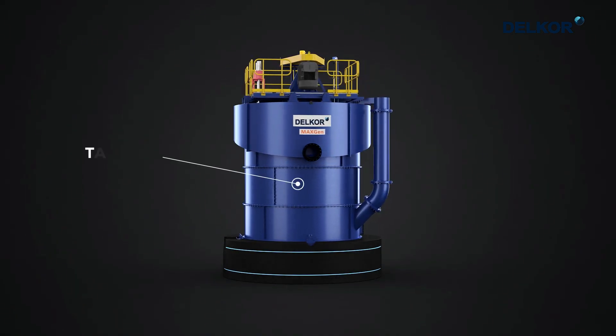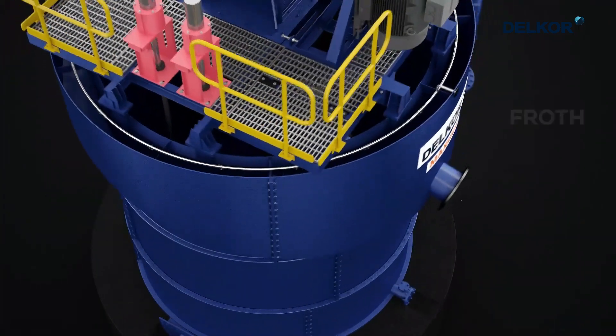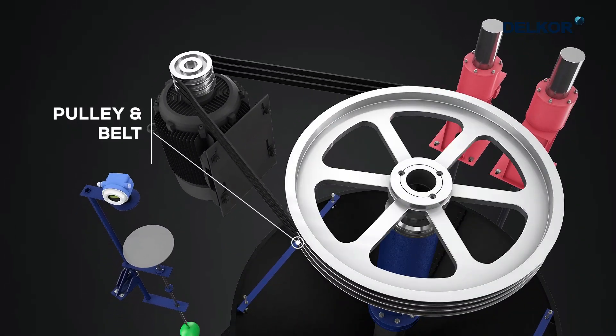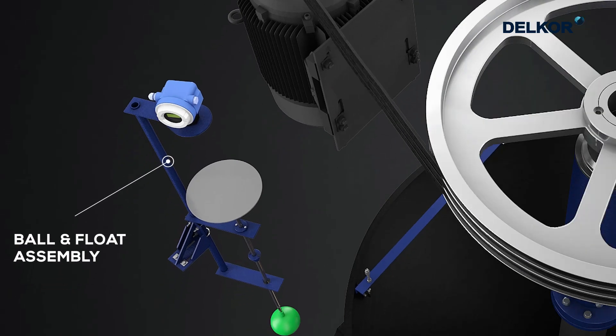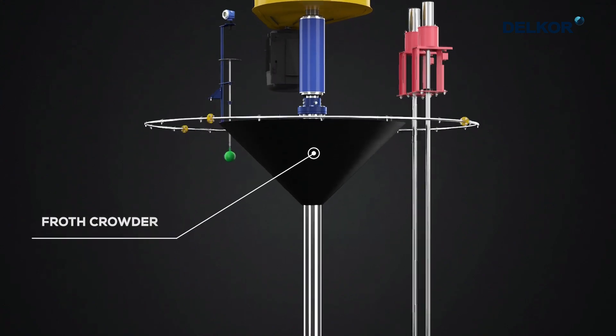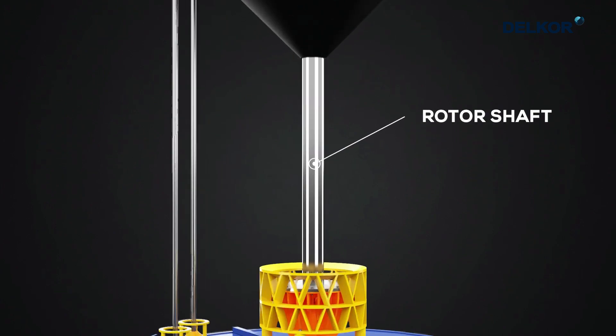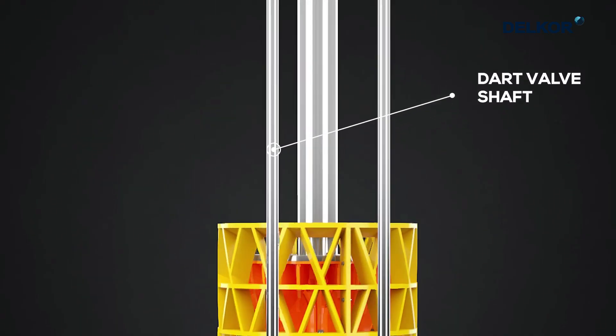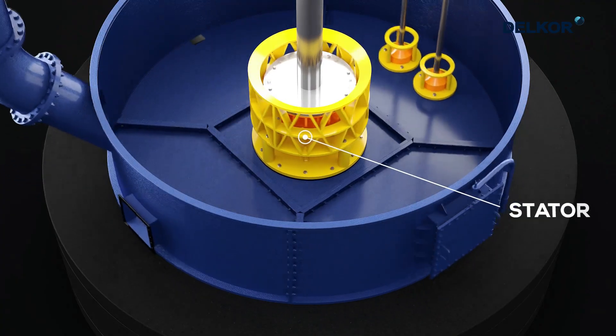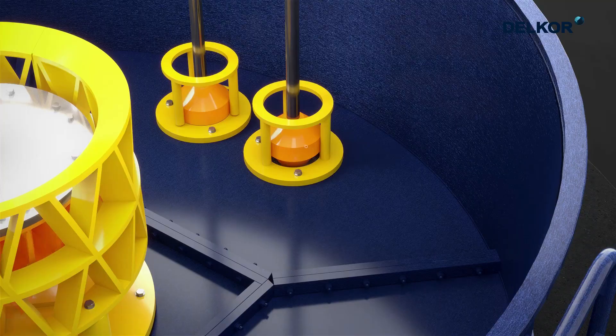The flotation cell consists of tank, feed box, froth launder with discharge nozzle, pulley and belt, ball and float assembly, bearing housing assembly, froth crowder, rotor shaft, dart valve shaft, dart valve actuator, stator, rotor, and dart valve plug.